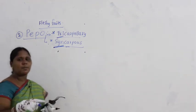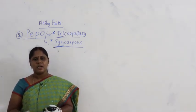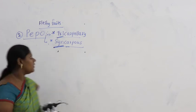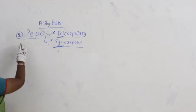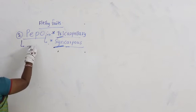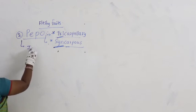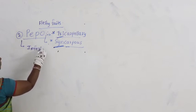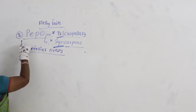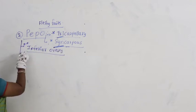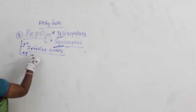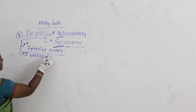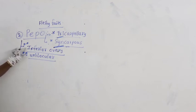Syncarpus means carpels are fused. Apart from this, pepo shows inferior ovary. This is very, very important to remember. Moreover, it is unilocular. Inferior ovary is very important because pepo has an inferior ovary.